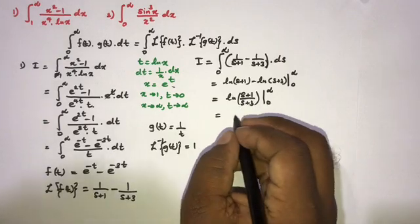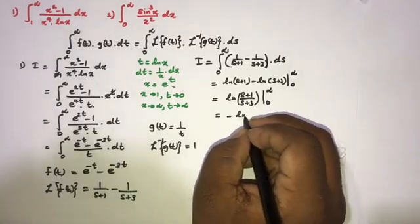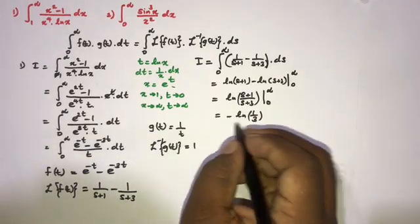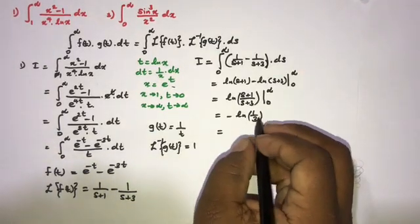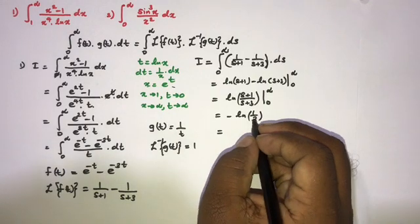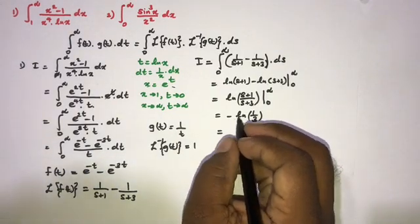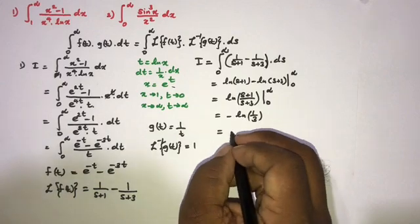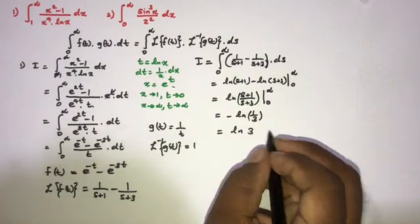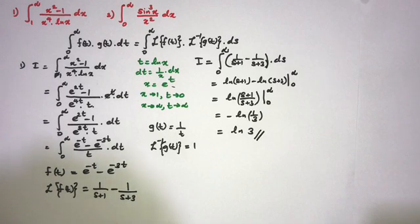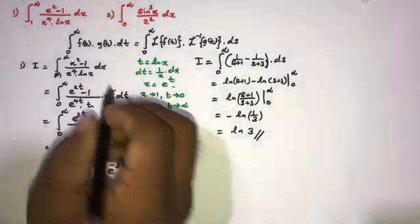Plugging in the limits: as s → ∞ the expression → 0, and at s = 0 we get ln(1/3). So I = 0 − ln(1/3) = ln(3). This is the answer for the first question. It is very straightforward to evaluate integrals using the mass identity.